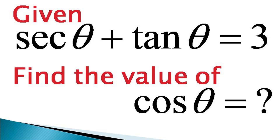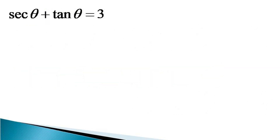This problem can be solved in many ways. To solve this problem, we first use the given condition sec θ plus tan θ is equal to 3, and multiply both numerator and denominator on the left hand side by sec θ minus tan θ.